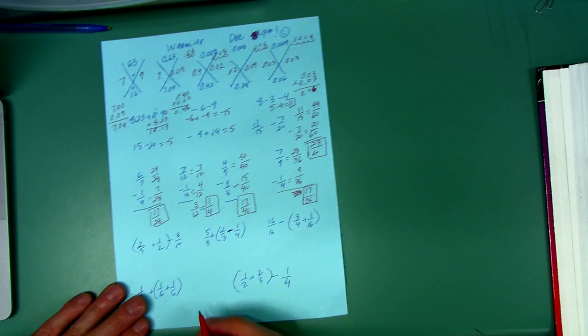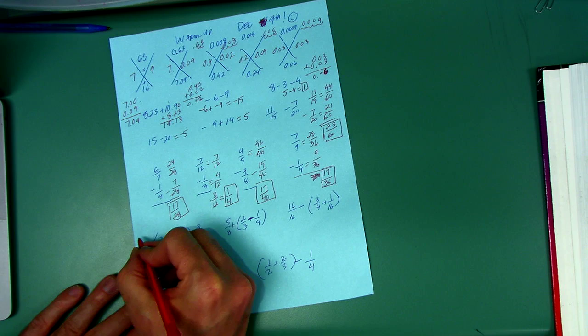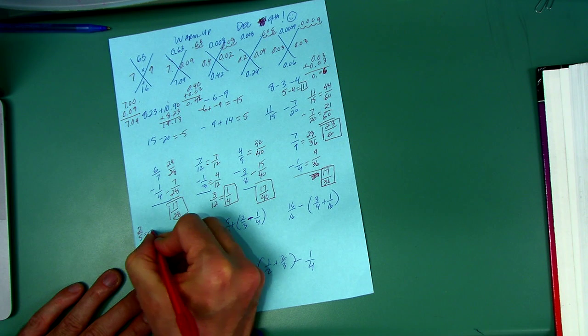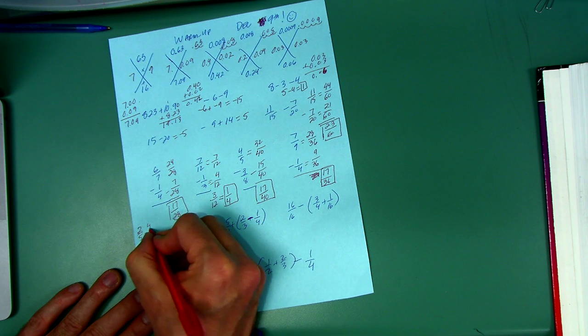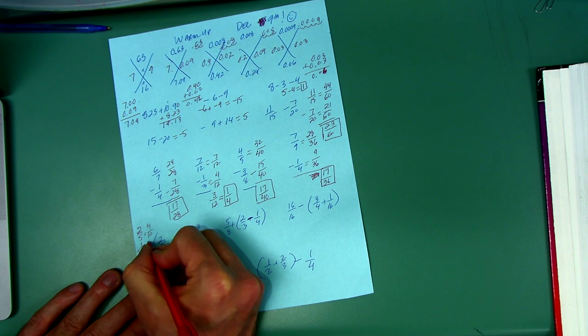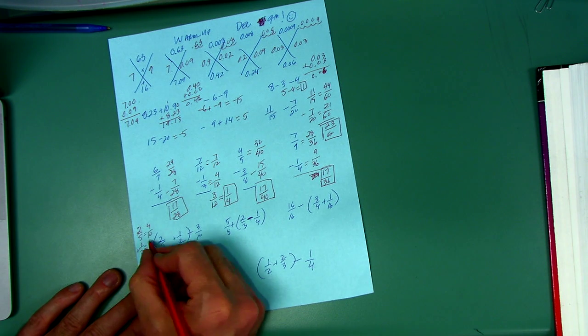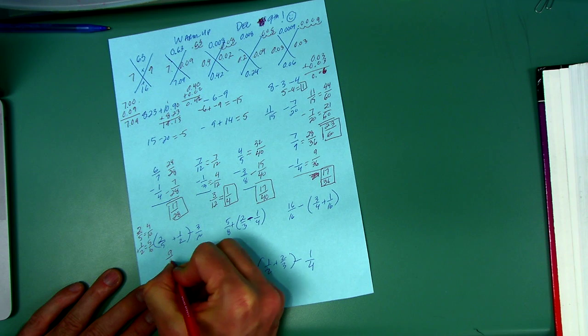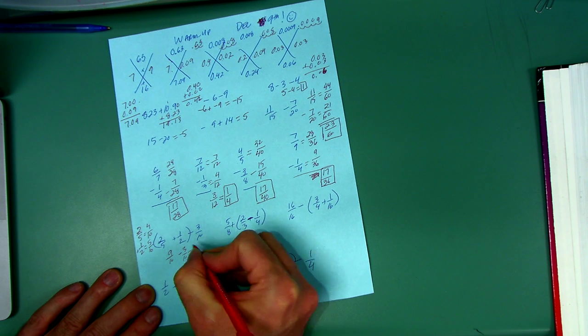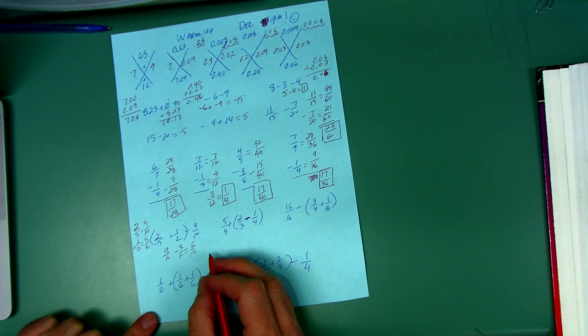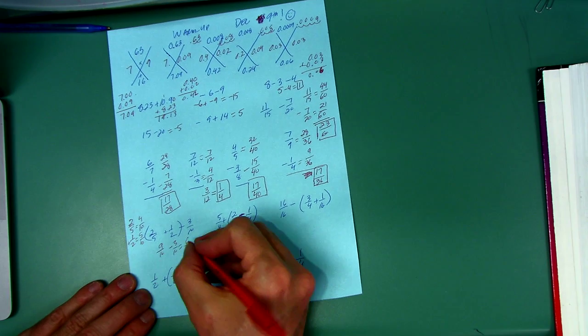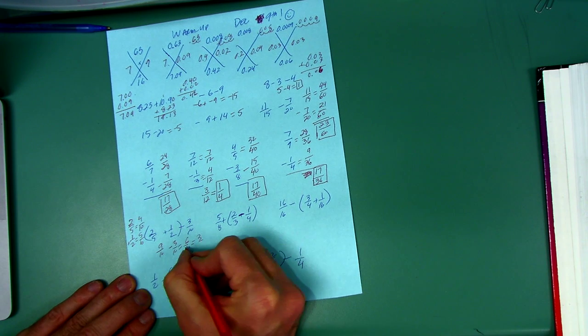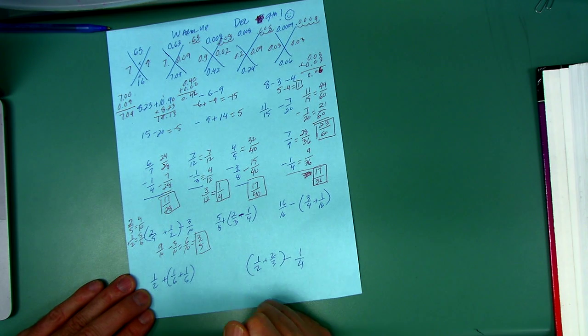All right, what do we got here? I got to do parentheses first. 2/5 plus 1/2. I'm going to go to tenths on these. 2/5 is how many tenths? I did 5 times 2, I got to go 2 times 2, that's 4/10. 1/2 is how many tenths? Well, what's half of 10? 5. 4/10 plus 5/10 is 9/10 minus 3/10 is 6/10. Now if this was a pizazz worksheet and you couldn't find 6/10, go see if you can simplify. Both of these are even, so what number goes into it? 2 goes into every even number. 2 goes into 6 three times, goes into 10 five times, so that's 3/5.